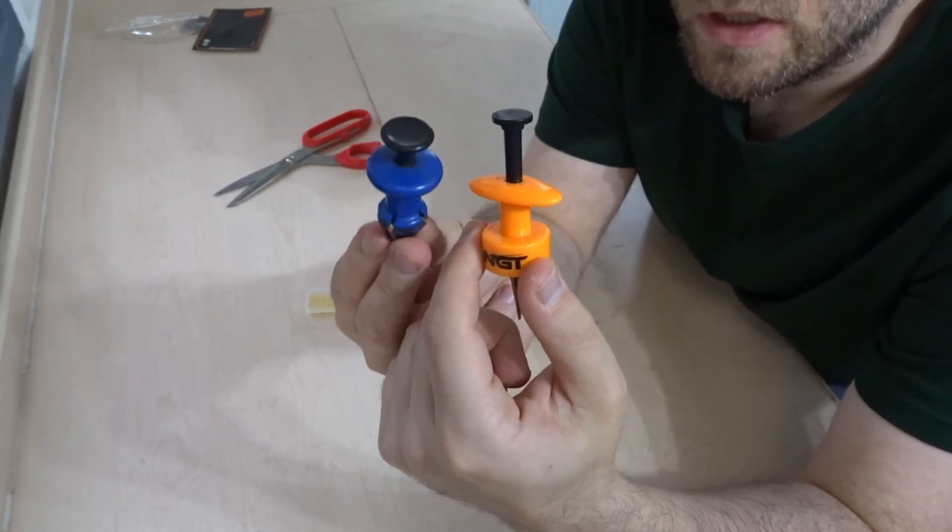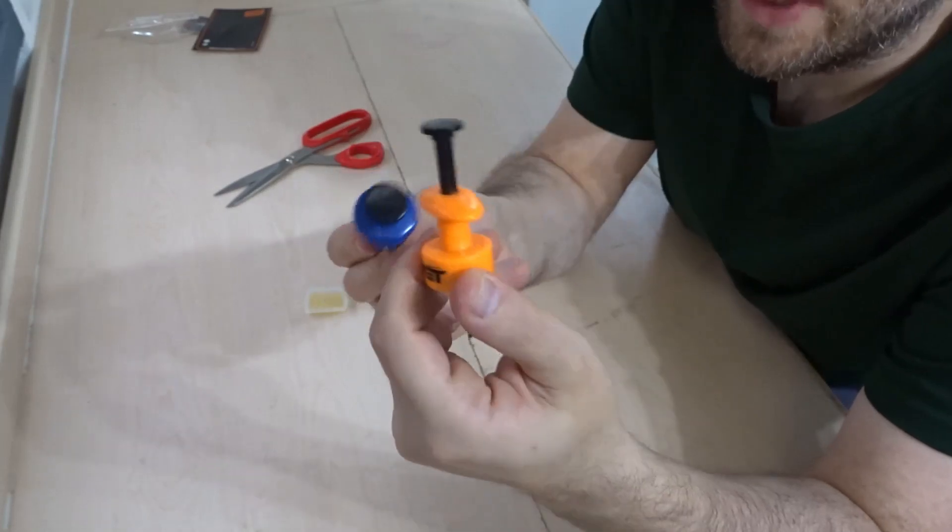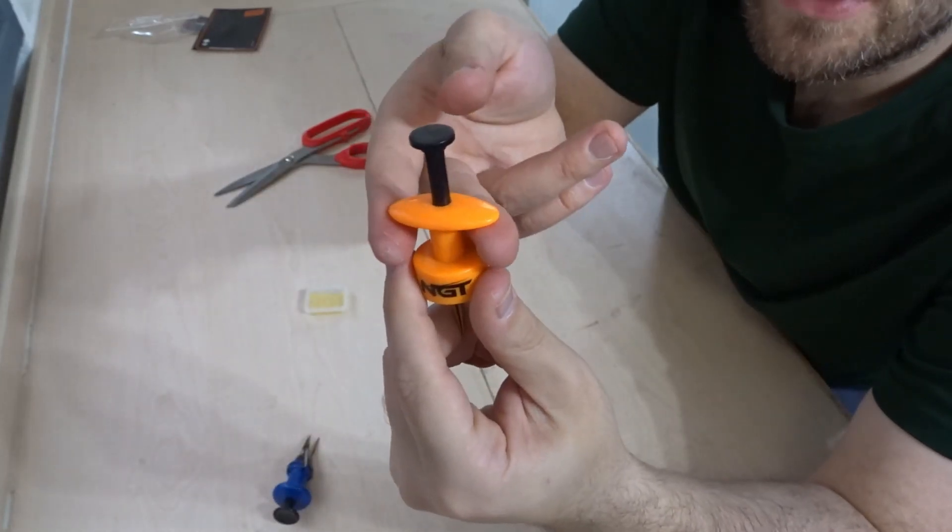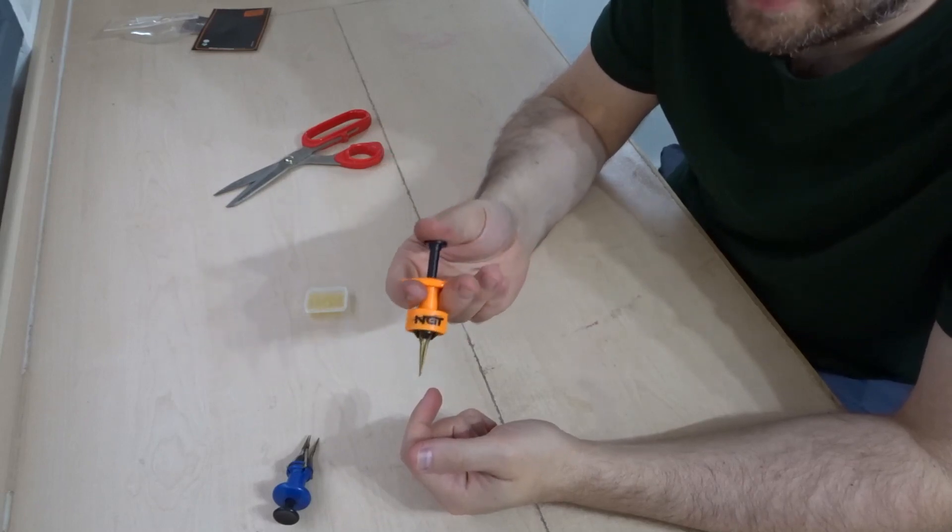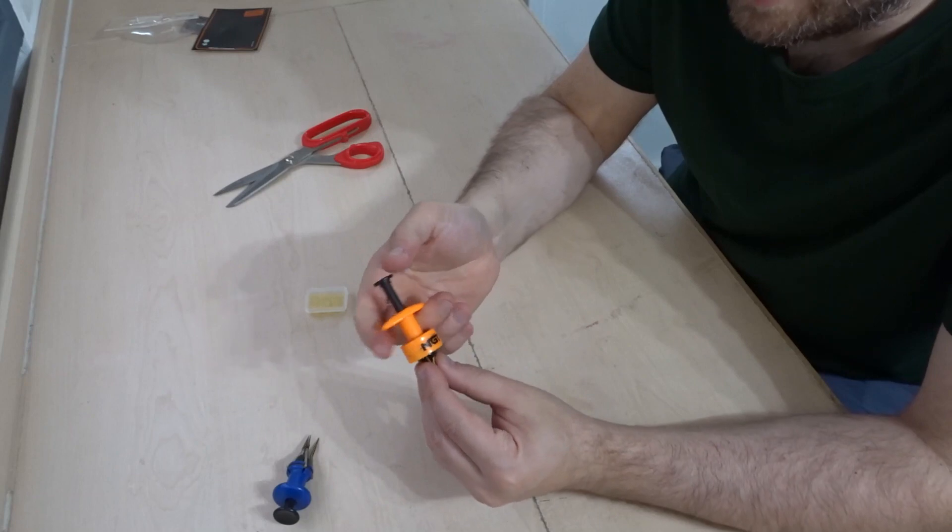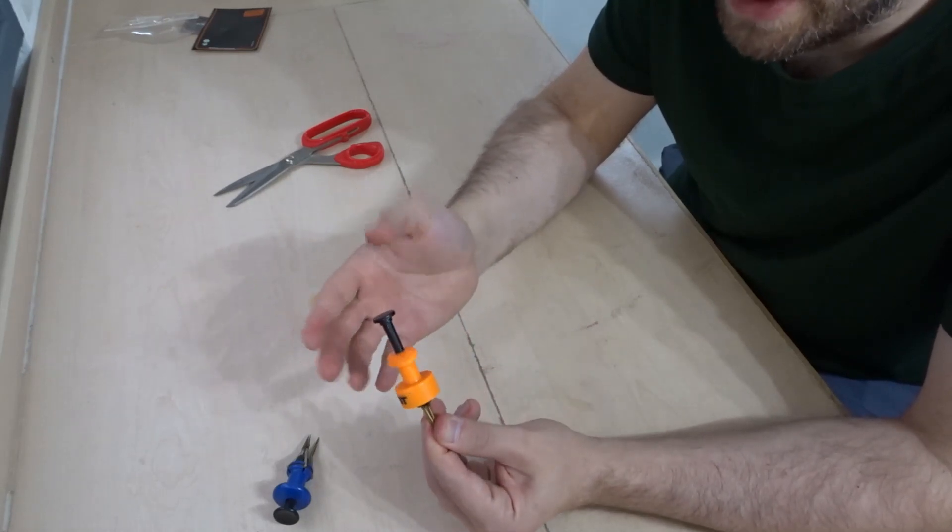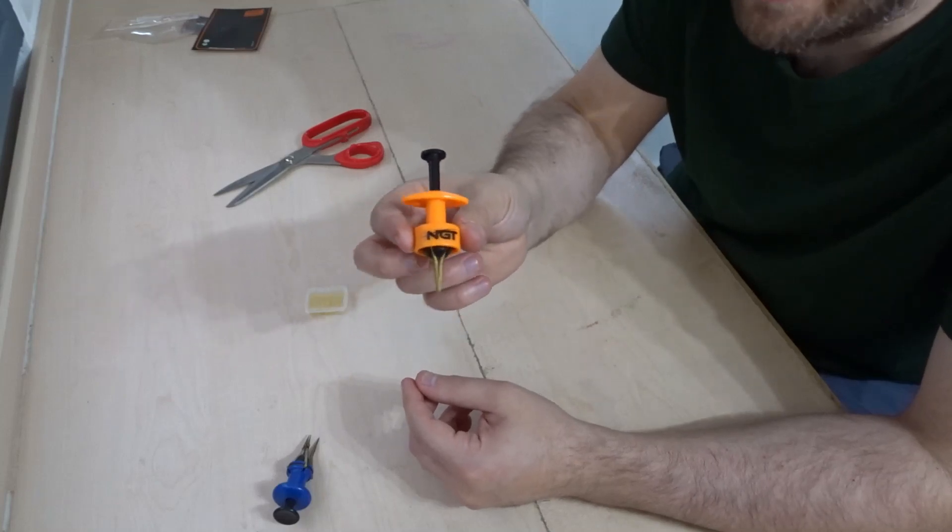When compared to this one, it has a bigger plunger at the top and more flared outsides here, so it's much easier to grab with two fingers. First impressions, I like the look of it. I like the fact that it's orange, it's easy to see. If you drop it on the grass, you're less likely to leave it on the bank.